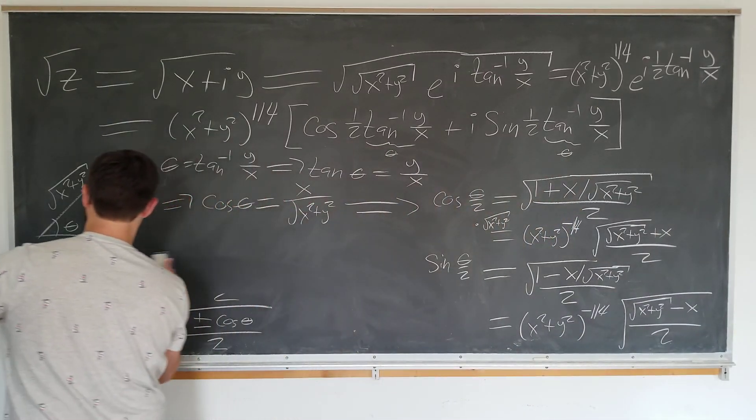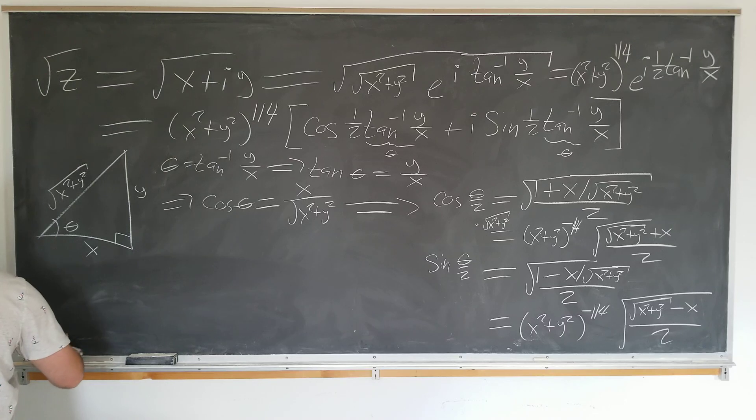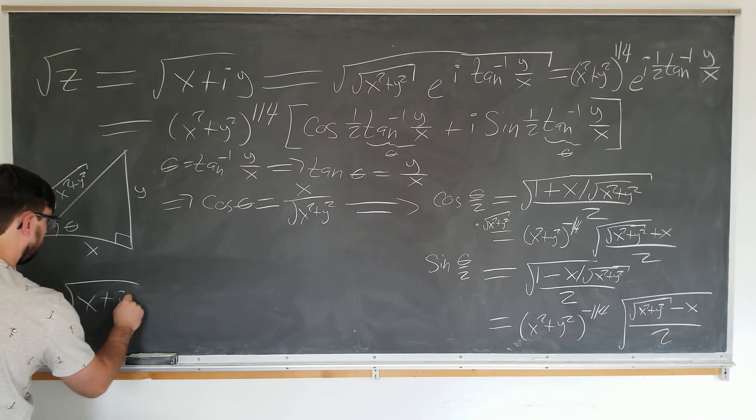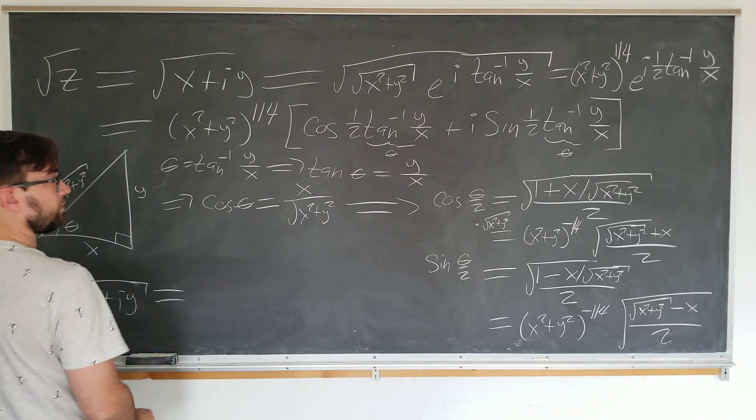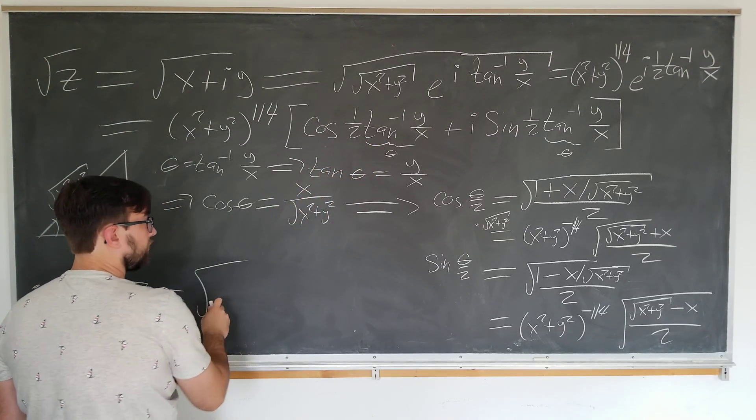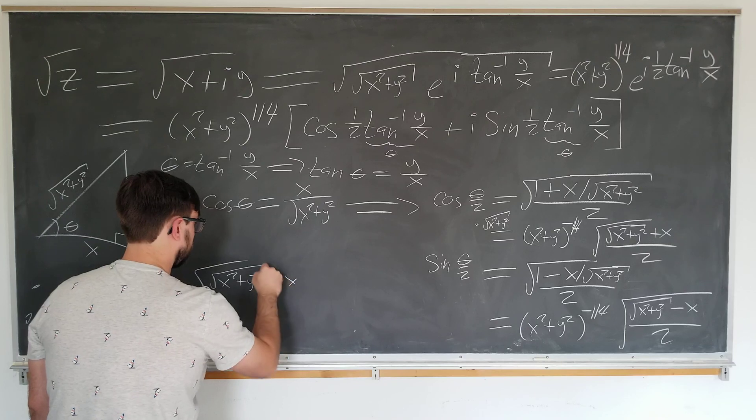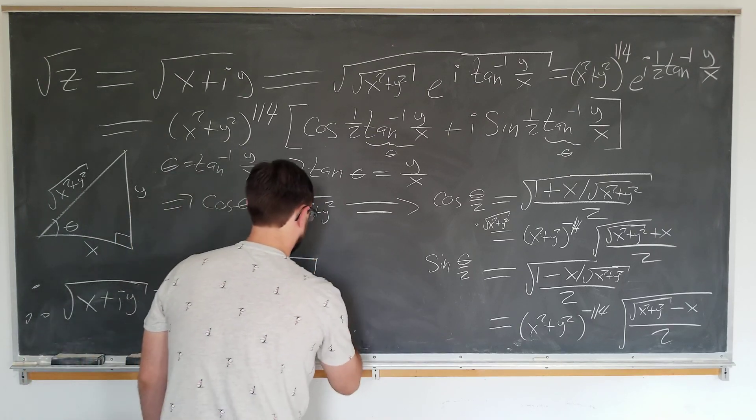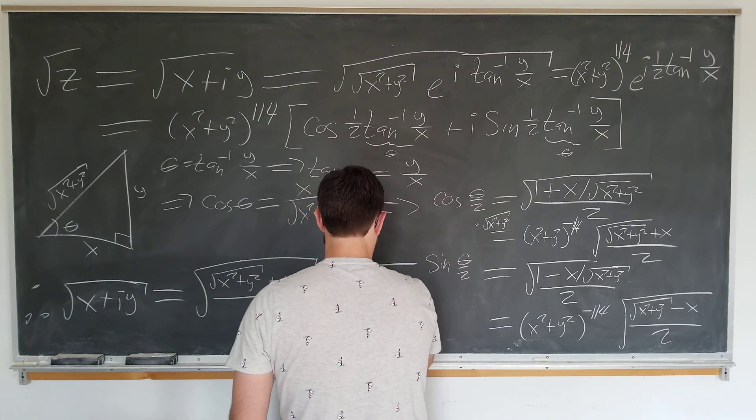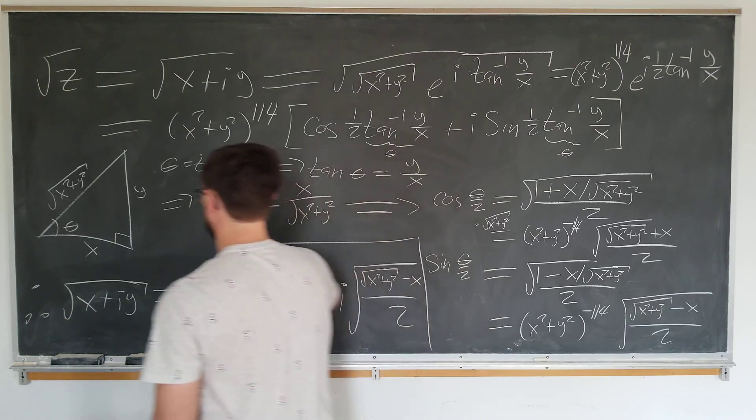We have to erase our identity now. But the final result is simply square root of x plus i y is now just we have cosine theta over two. So square root of x squared plus y squared plus x over two plus i times square root of x squared plus y squared minus x over two. And this is our final result.